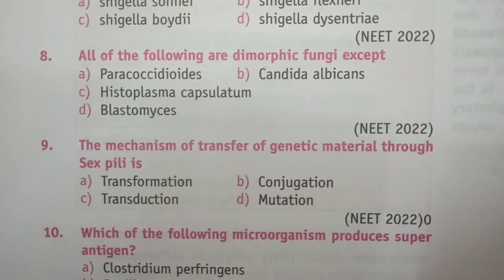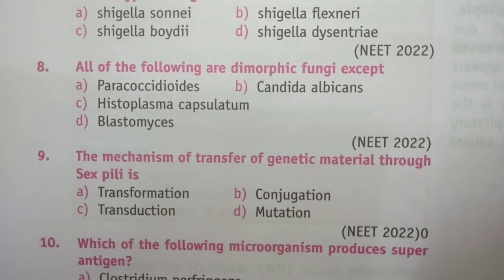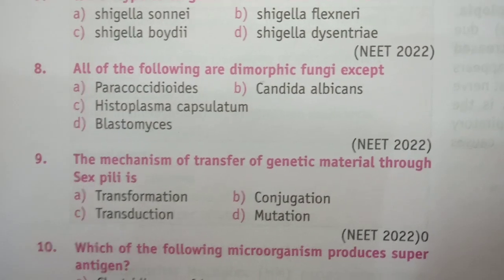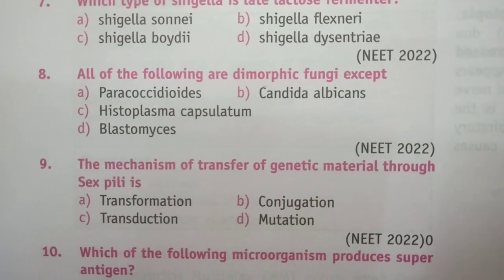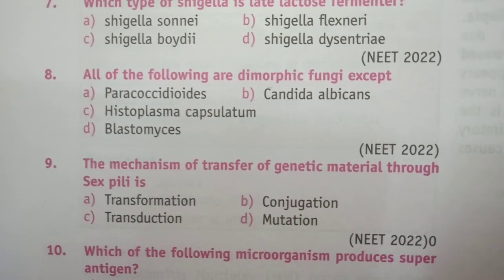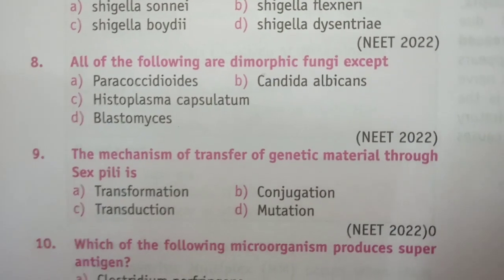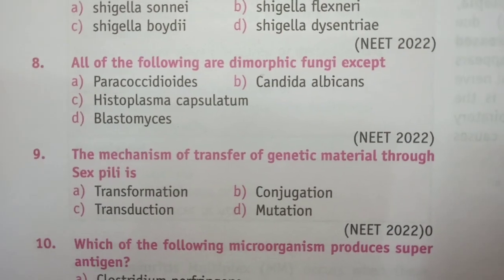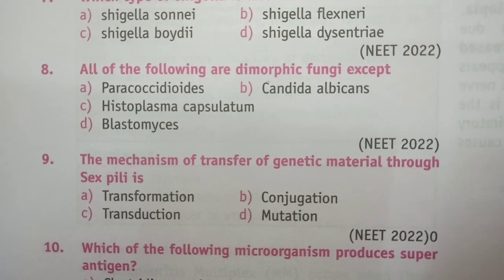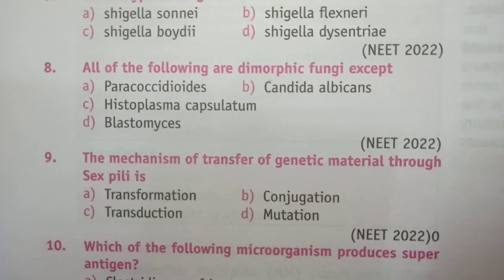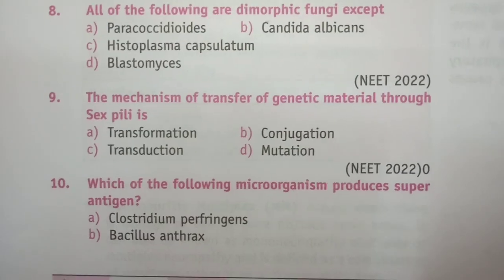Question 9: The mechanism of transfer of genetic material through sex pili is: transformation, conjugation, transduction, or mutation. This is also an important question — the answer is conjugation. The mechanism of transfer of genetic material through sex pili is conjugation.